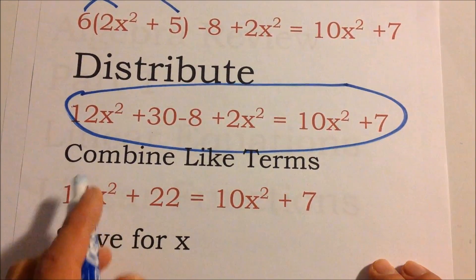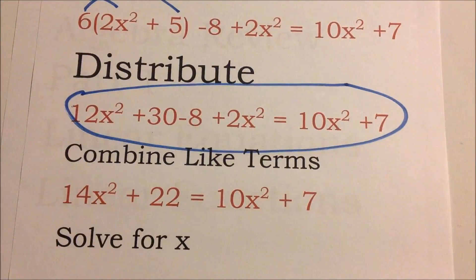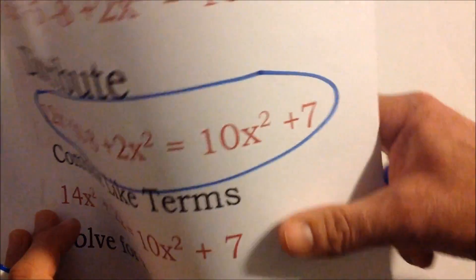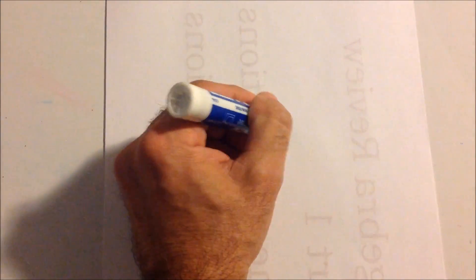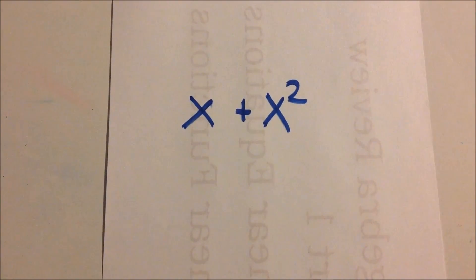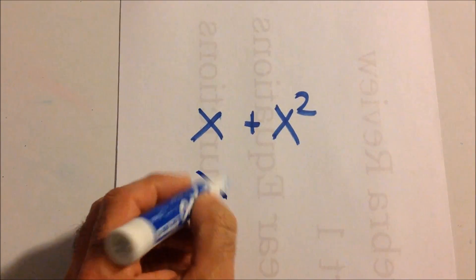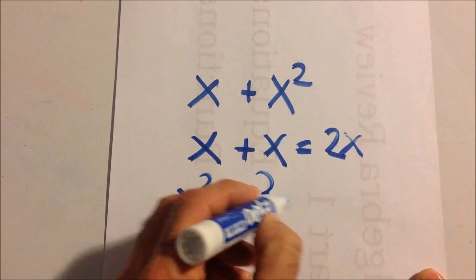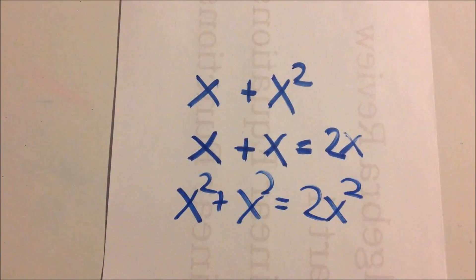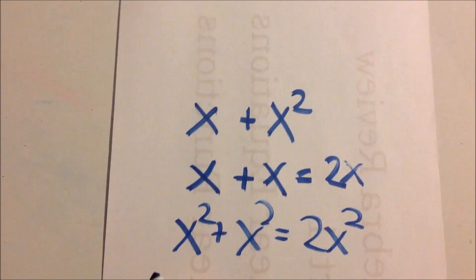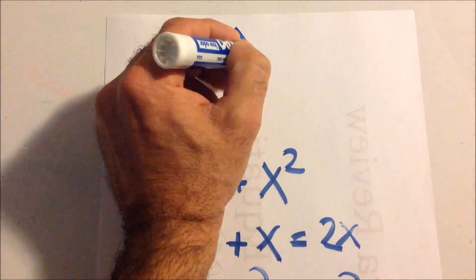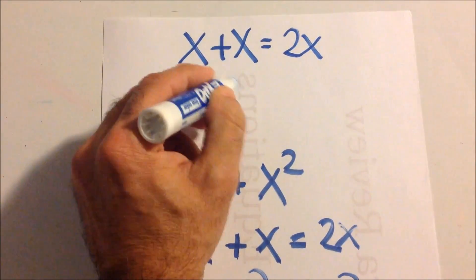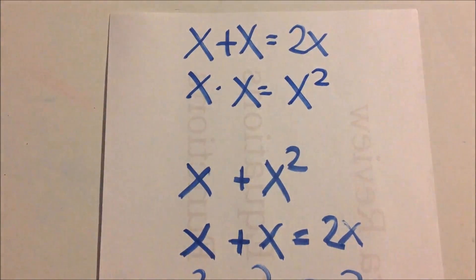Now we can combine like terms. Like terms have the same letter and the same exponent. So x plus x squared can't be combined, but x plus x gives 2x, and x squared plus x squared gives 2x squared. Don't confuse adding with multiplication — x plus x is 2x, but x times x is x squared.